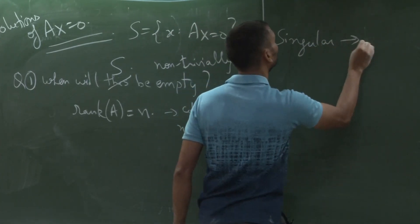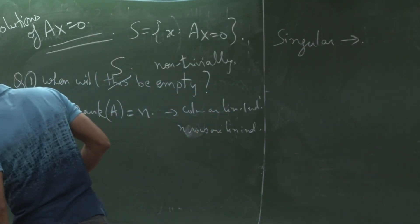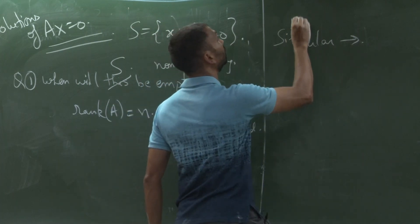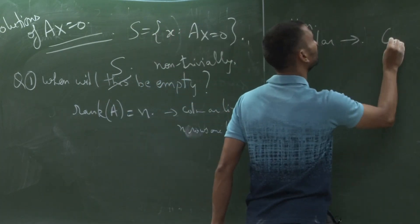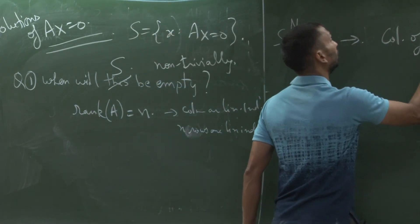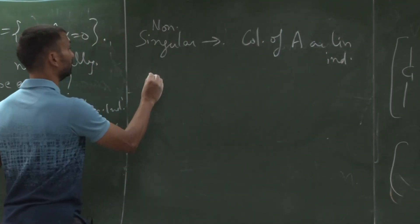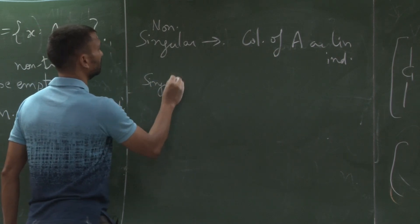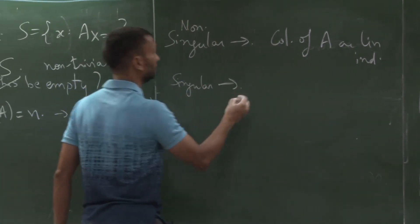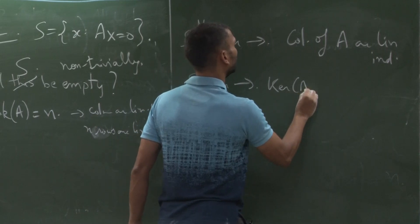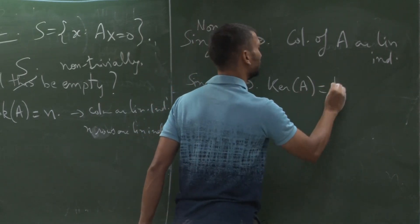There are two cases. I should say non-singular. This is when columns of A are linearly independent. The other case is singular, where kernel of A has some dimension, let's say k.